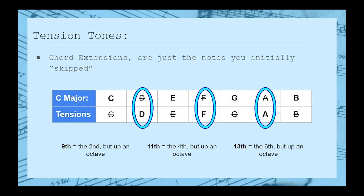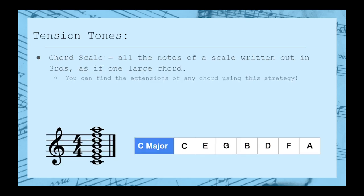This collection of all the notes in a scale, stacked in thirds, is called a chord scale. And we can use this pattern to find the chord scales for every note in our key.